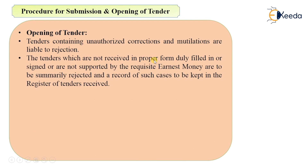Tenders which are not received in proper form, not duly filled in, or not signed, and are not supported by the requisite earnest money, are to be summarily rejected. A record of such cases is to be kept in the register of tenders received. The officer has the authority to reject tenders not in the proper format or where earnest money is not attached, and he will record the reason for rejection in the register of tenders.